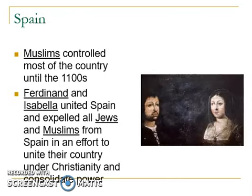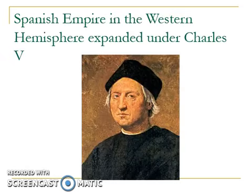Finally, we have Spain. Muslims controlled most of the country until the 1100s. Ferdinand and Isabella united Spain and expelled all Jews and Muslims from Spain in an effort to unite their country under Christianity and consolidate power. They believed they could hold more power if there were only Christians in their nation-state. They were influential leaders in the beginning years of Spain after it was taken over from the Muslims. The Spanish Empire in the Western Hemisphere would later expand under Charles V, who was responsible for sending people west.